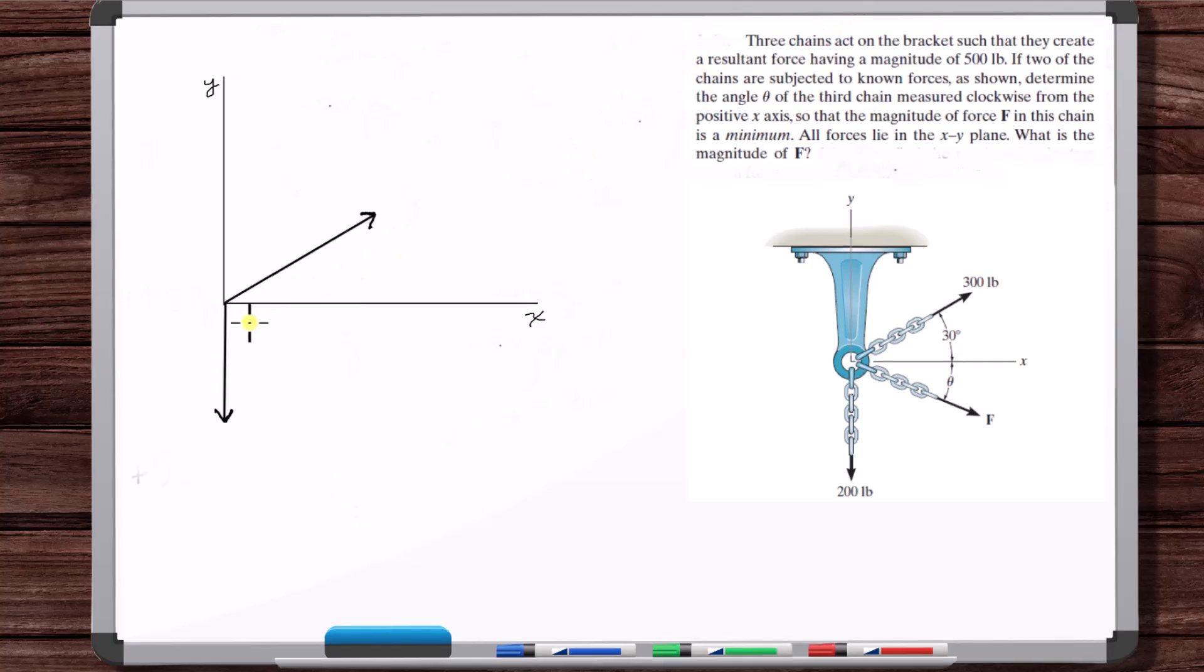All we're going to do is get the vector sum of these two and we'll get a direction and that's the direction of F because we're just going to add. F is going to be in that direction, the exact number needed to get to 500. Just a straight addition. Let's get the sum of these two vectors. We'll use the triangle rule here. So this 300 plus 200 results in this here.